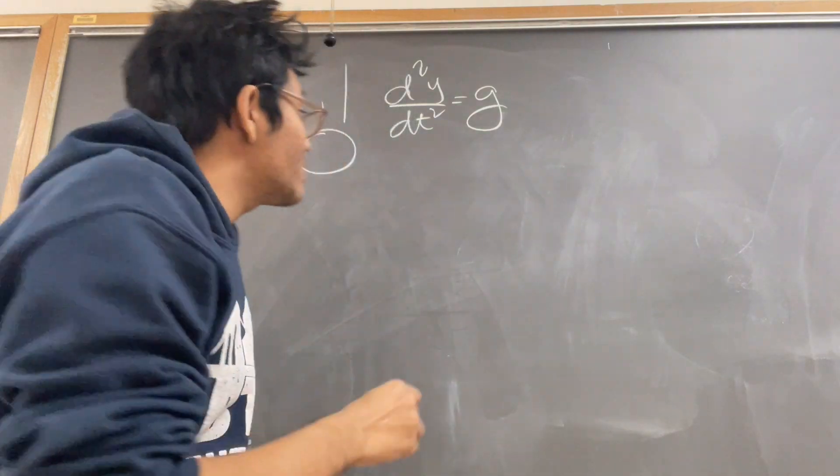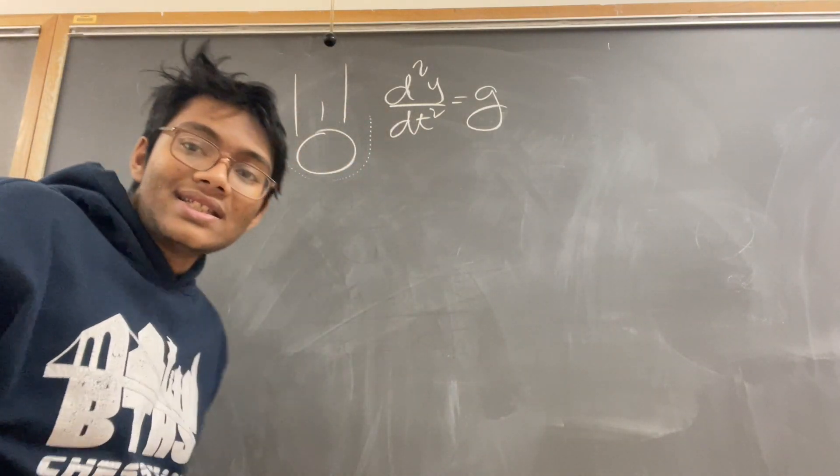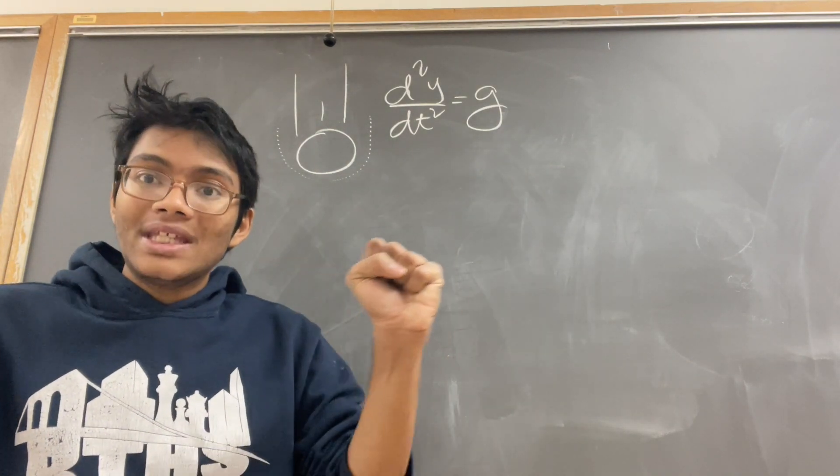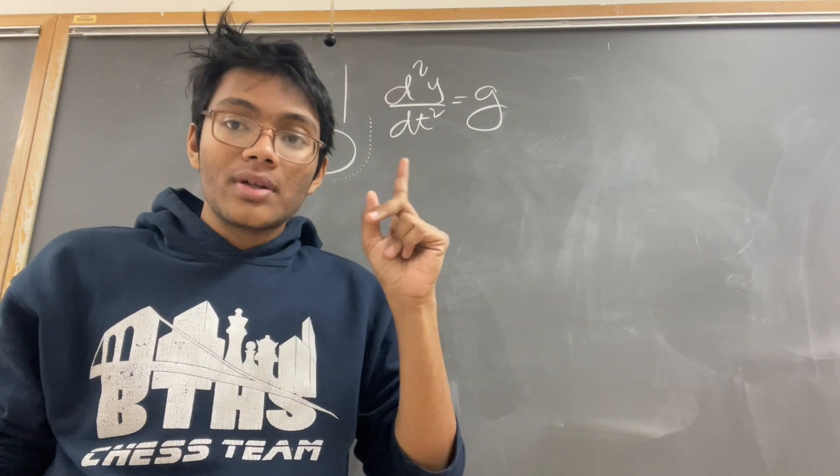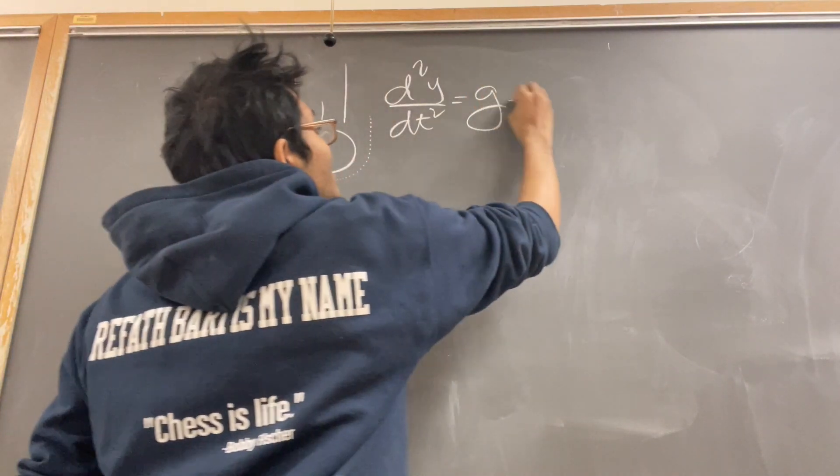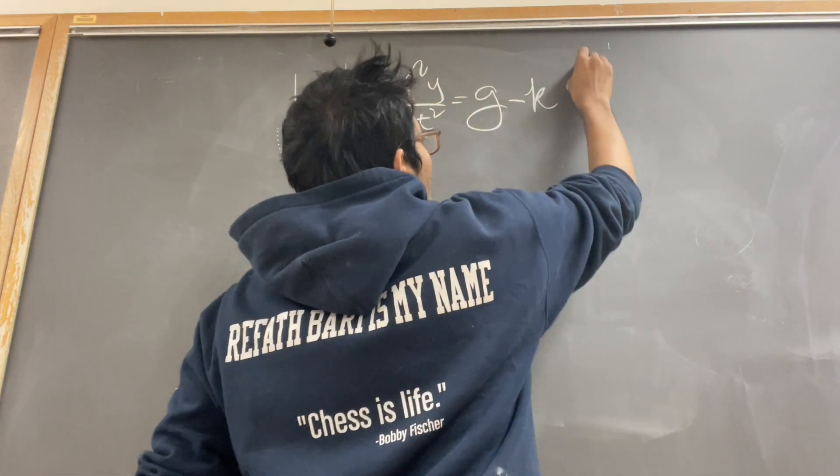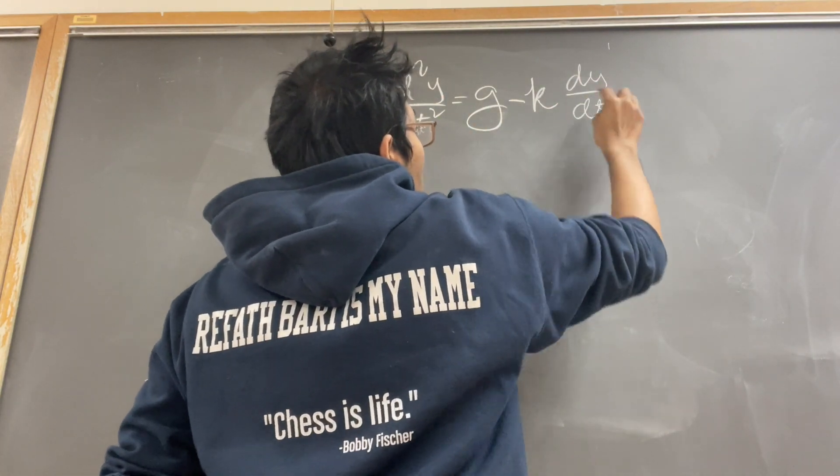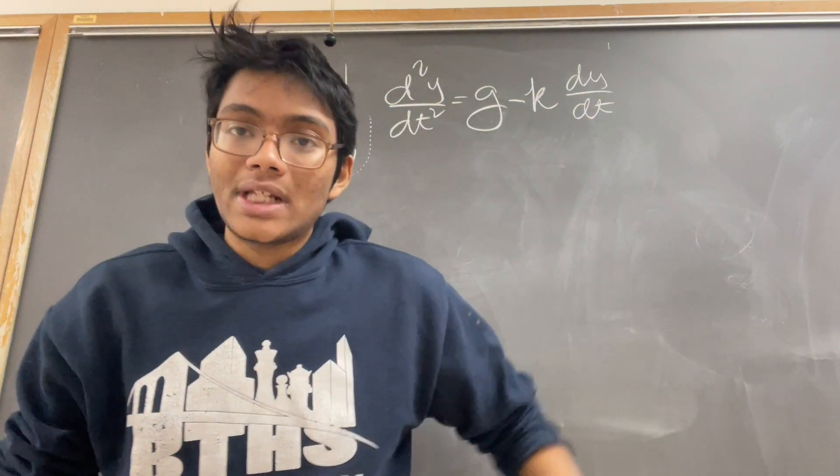But there's also air resistance here, air resistance cushioning the ball, slowing it down. And this air resistance is going to be proportional to the ball's velocity. Hence, we subtract from the gravitational force an air resistance force that is proportional to the ball's velocity, dy/dt, by a constant proportionality, k.